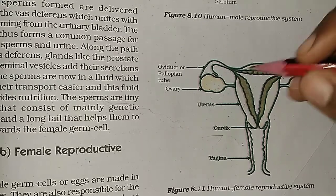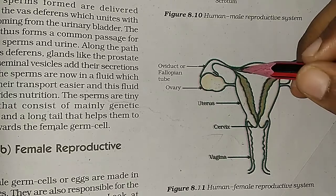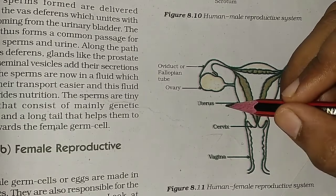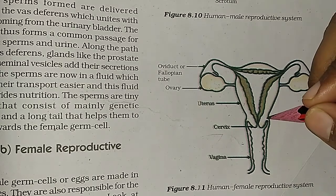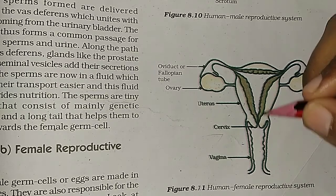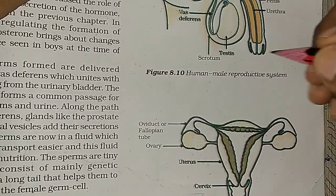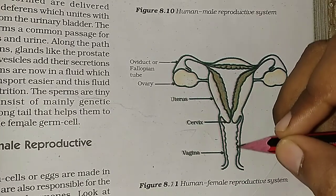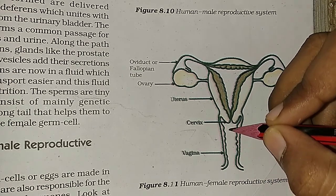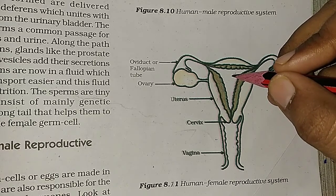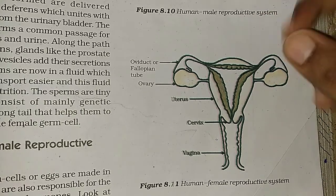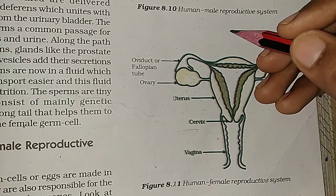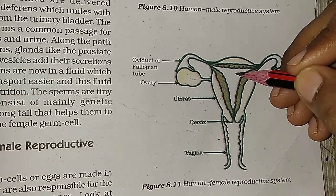The cervix connects the uterus and vagina. During sexual intercourse, sperm are transferred to the vagina by the penis, which is part of the male reproductive system. The sperm then move through the vagina, and the fusion of the female gamete (egg) and the male gamete (sperm) is called fertilization.